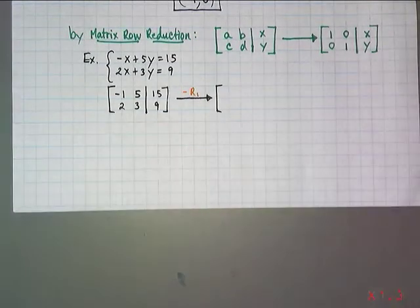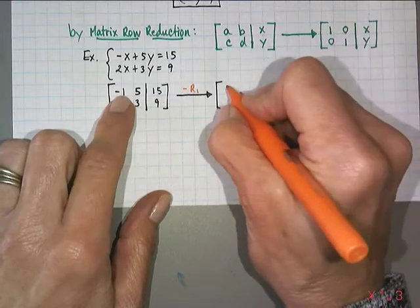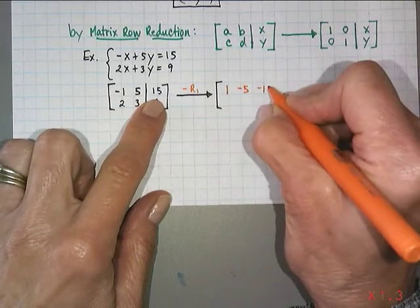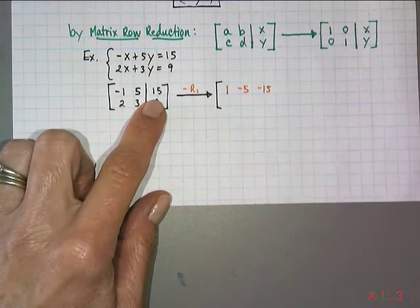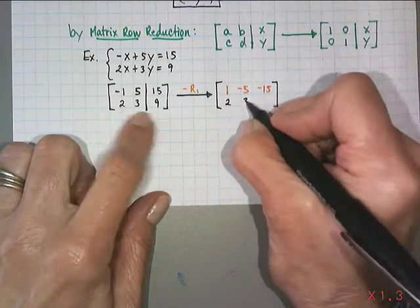So row one was negative one, five, fifteen. It's now going to be one, negative five, negative fifteen. Now all I had intended to change was row one, so that's all I'm changing. Row two is going to stay the same.